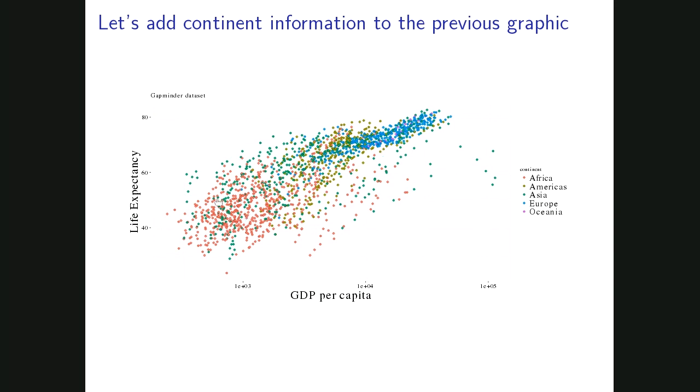Now we can see the life expectancy by each of the continents. We can see that Africa's life expectancy is somewhere here, and Europe's and Oceania's life expectancy is way up here.